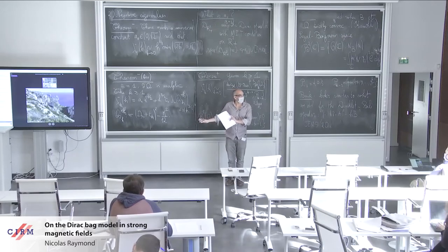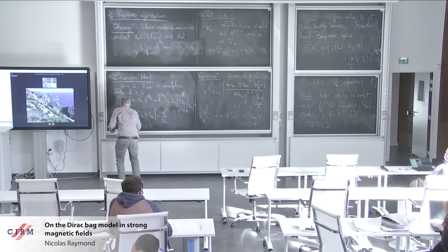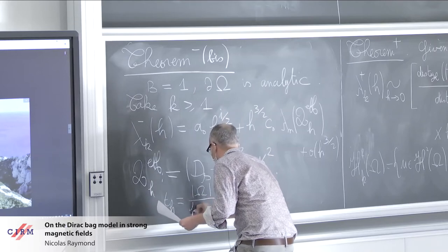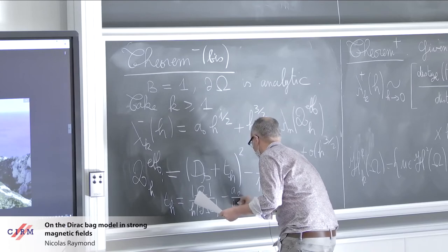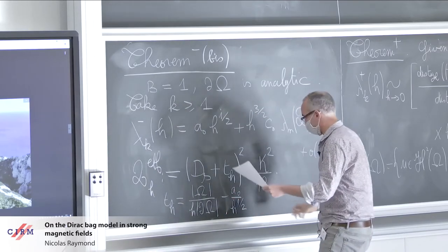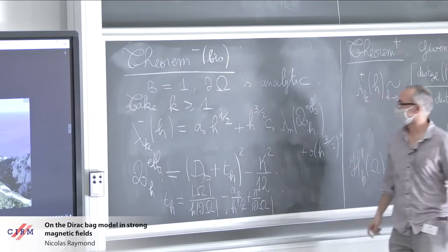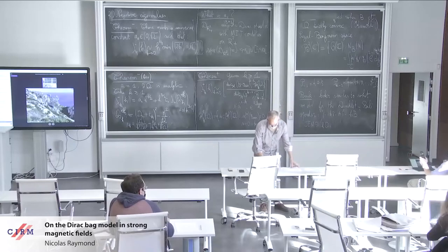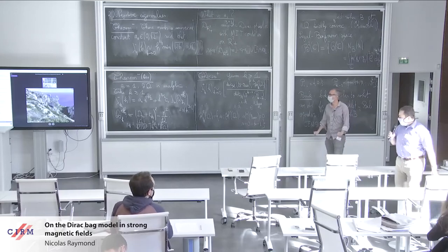θ_h is a phase shift given by the volume of omega divided by h times the length of the boundary of omega, minus a₀ divided by √h, plus π over the length of the boundary. And probably I have to stop here. Certainly. So I stop. Okay. So thanks a lot.